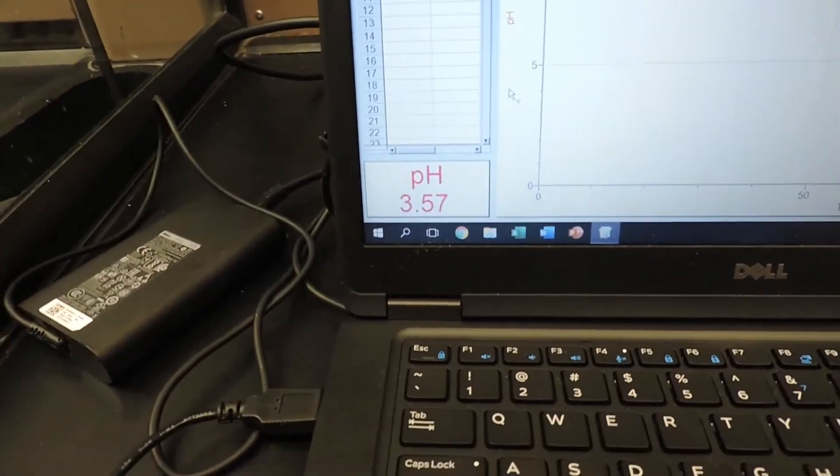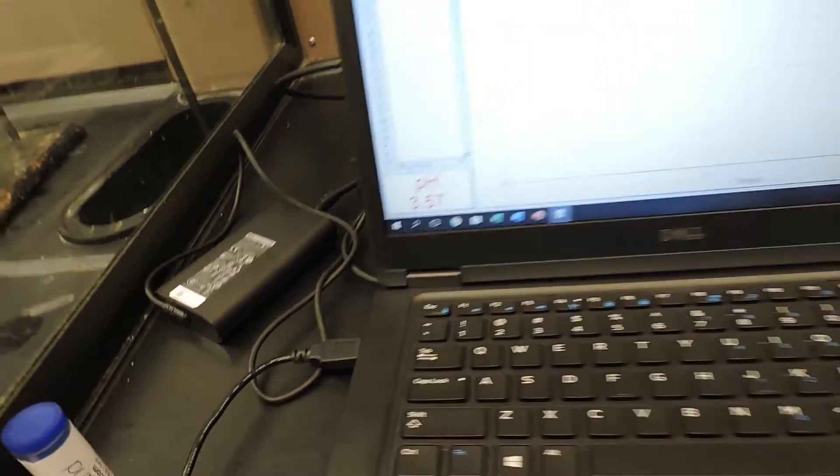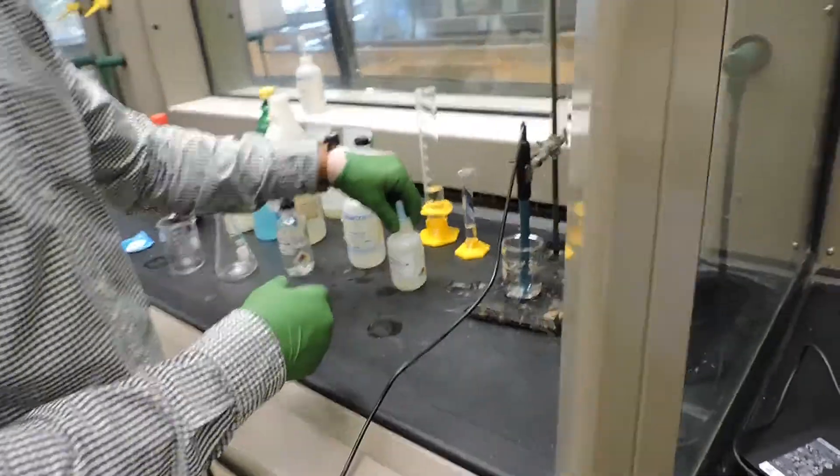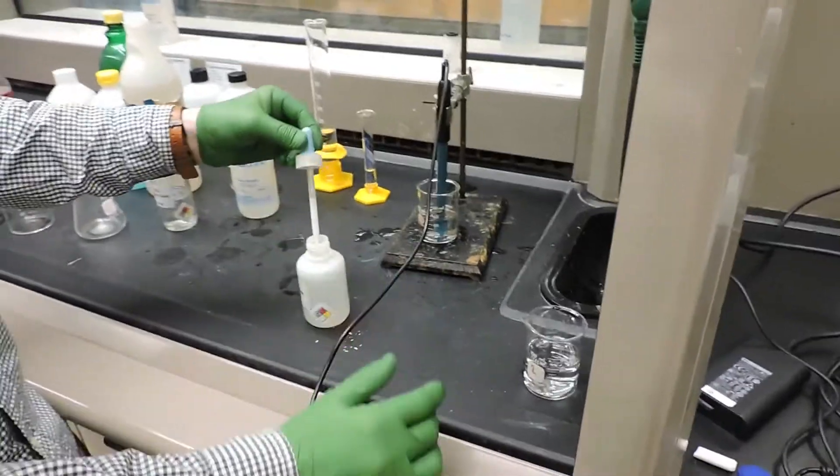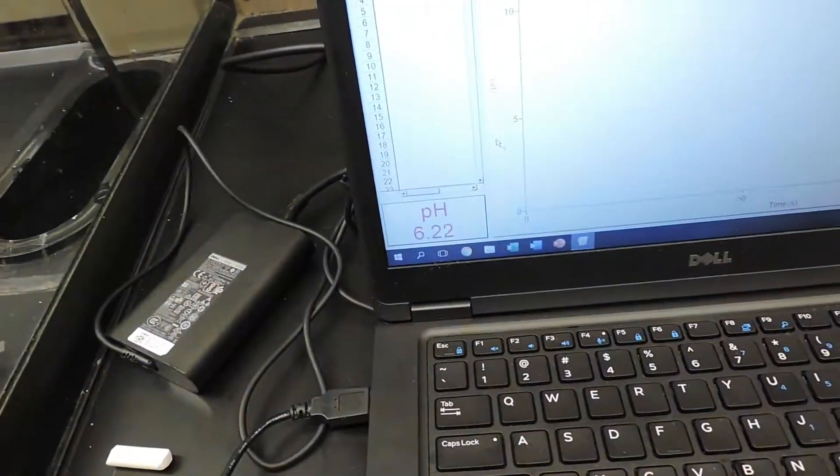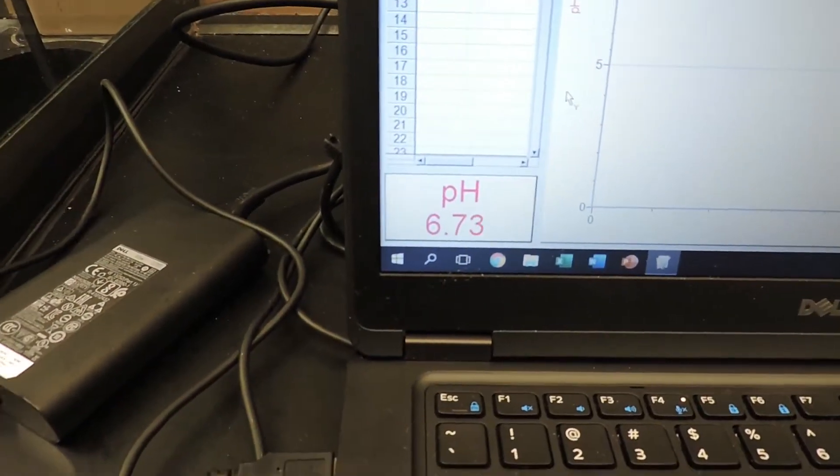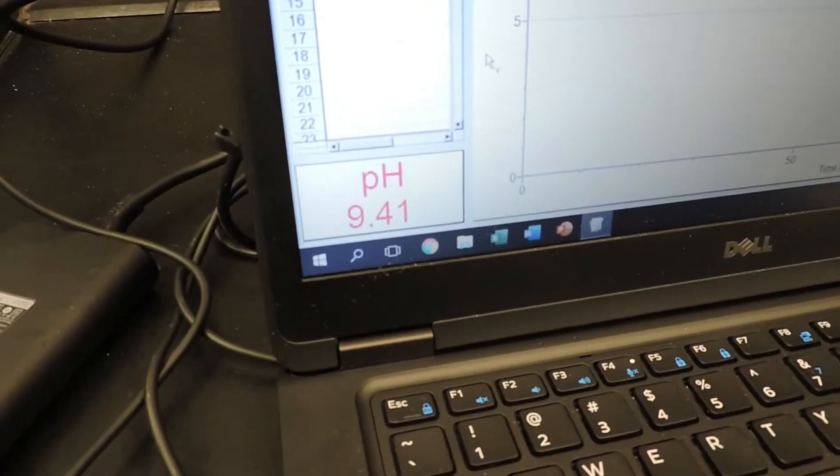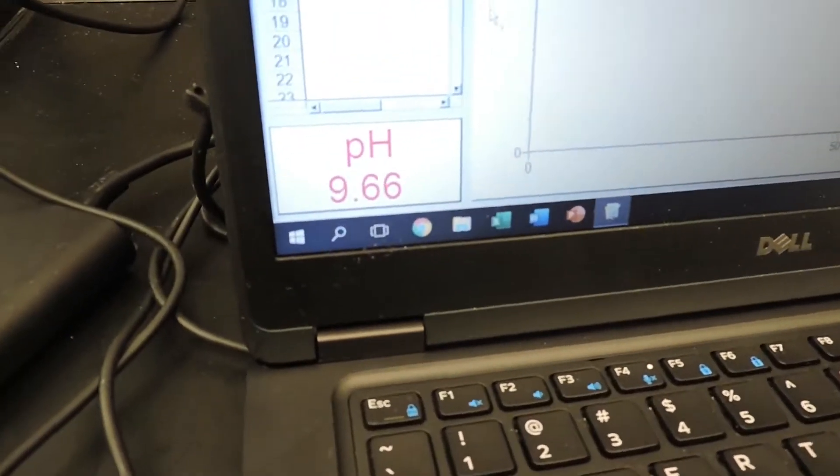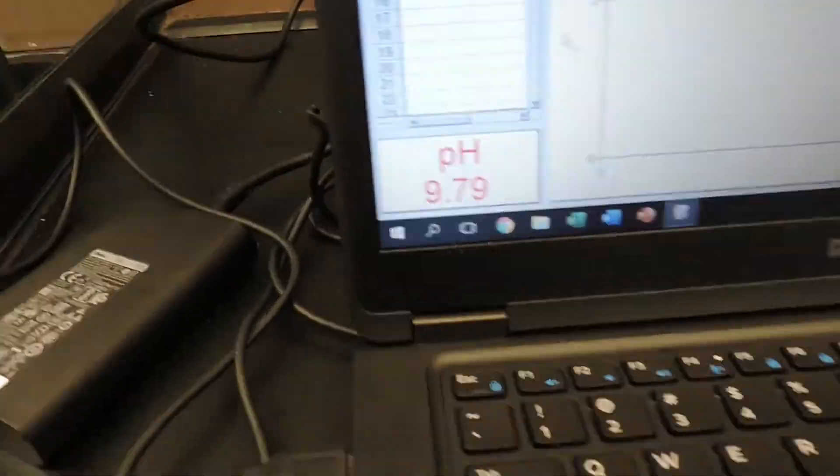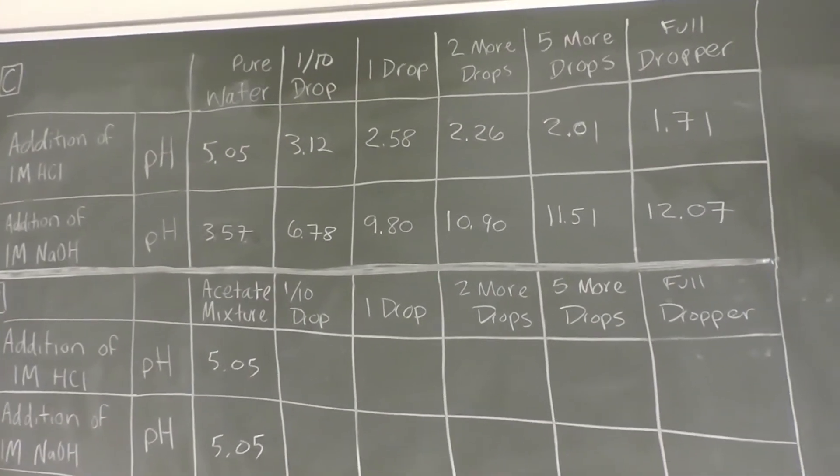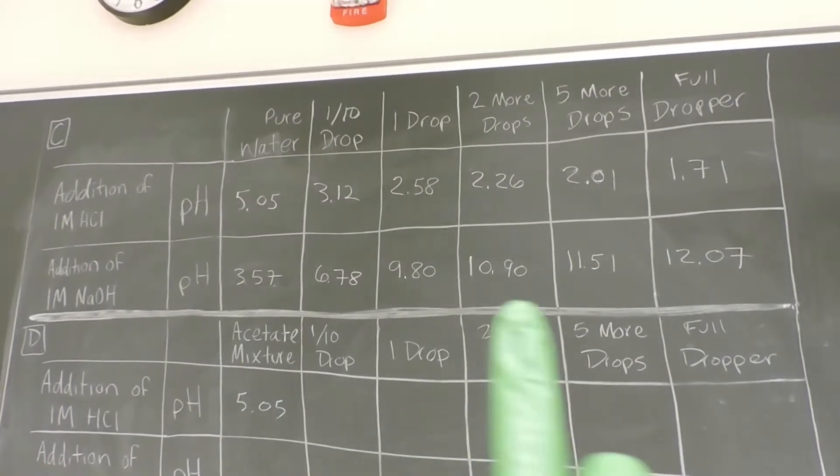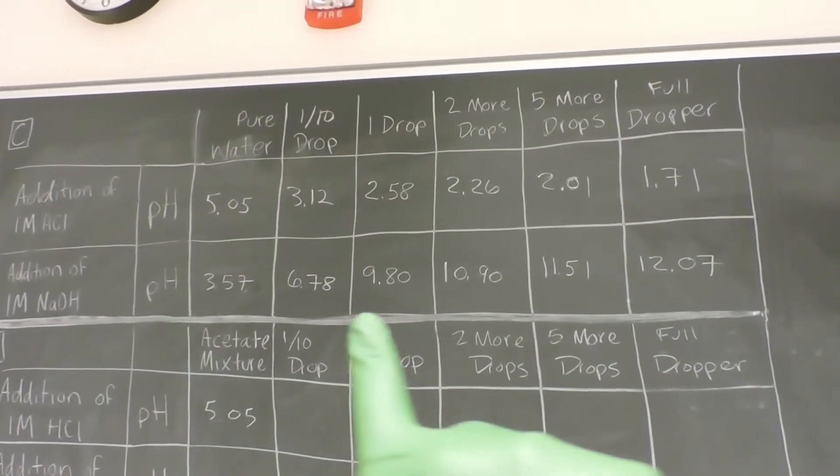We'll record this as 3.12 for our one tenth of a drop addition of hydrochloric acid. So the pH we're going to use for the water in the beginning of the sodium hydroxide addition is 3.57. We're going to do the same thing with the sodium hydroxide. We're going to add a tenth of a drop, one drop, two drops, five drops, and then the full dropper. These are the total pH values after adding different amounts of the acid and the base to just DI water.